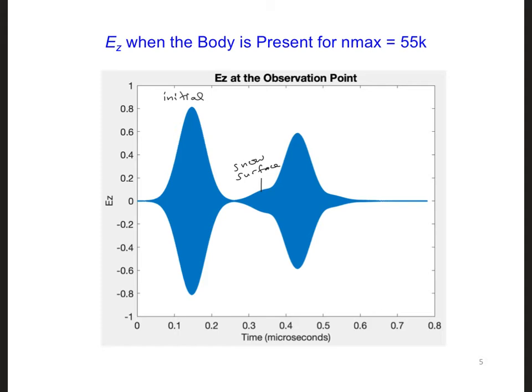But then a larger reflection occurs, and this is from the body. We can see that the body and the snow surface are close enough to each other that the second half, this part, of the reflection from the surface of the snow overlaps with the beginning of the reflection from the body.